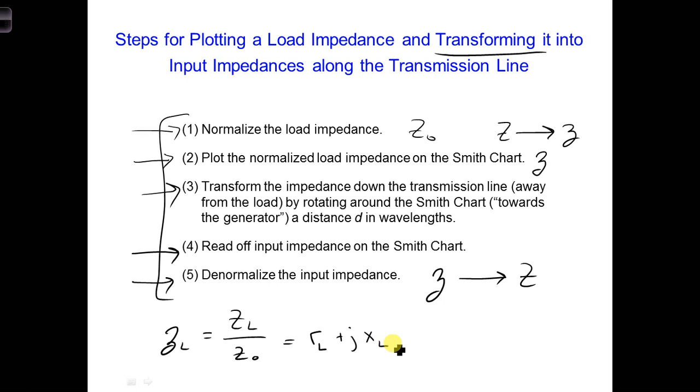So lowercase represents a normalized impedance, and only lowercase z's are plotted on the Smith chart. Capital Z's are unnormalized impedances, actual impedances.